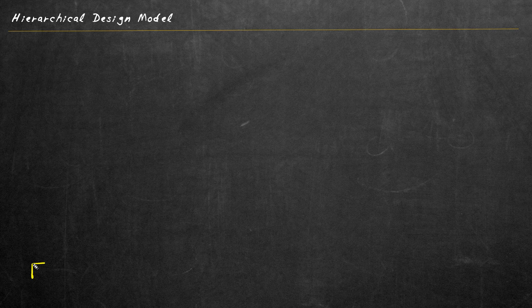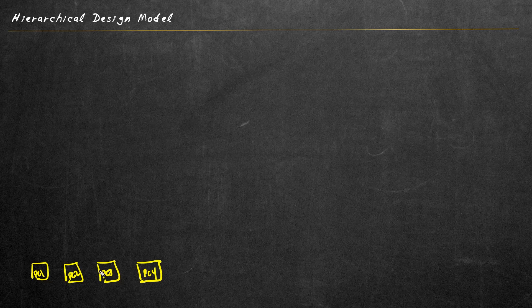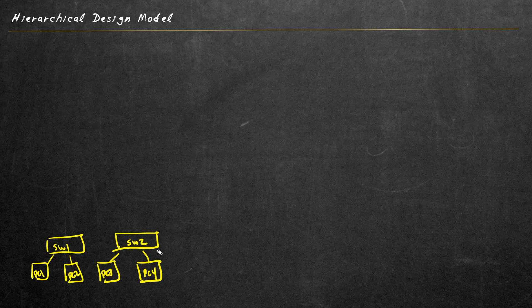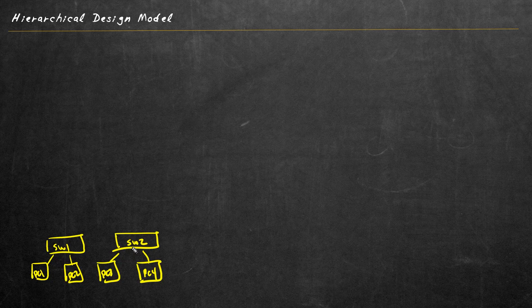Let's begin with something that everybody knows: a device like a computer that needs access to either the internet or internal servers. We'll represent four computers — PC1, PC2, PC3, and PC4. Those could be Linux, Windows, or Mac devices on a network. Those devices are very likely connected to some type of a layer two switch. We'll call these Switch One and Switch Two. These switches are the devices' on-ramp to the network — that's the access layer.